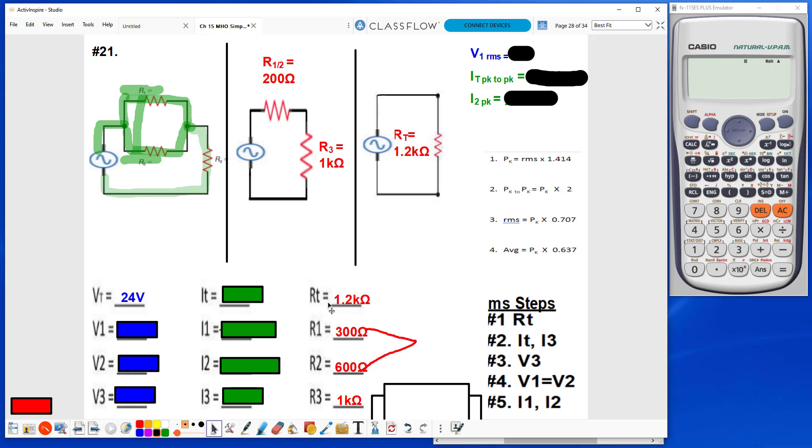Now I have 2 out of 3 for It, so I can find It by taking the Vt divided by the Rt, and that gives me an It of 20 milliamps. Since R3 is on the main branch, and there is only one pathway for current to flow through here, this tells me that I3 is also going to be 20 milliamps.